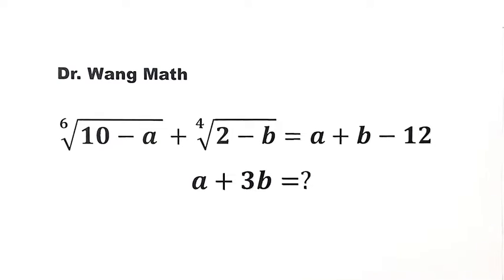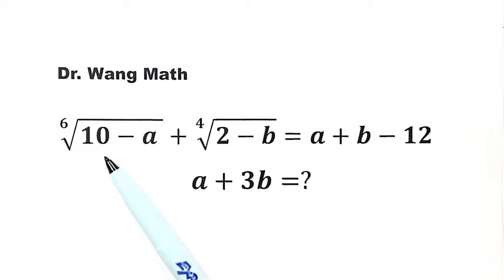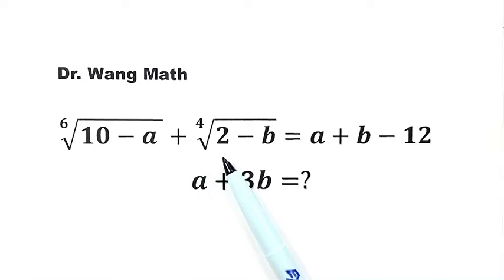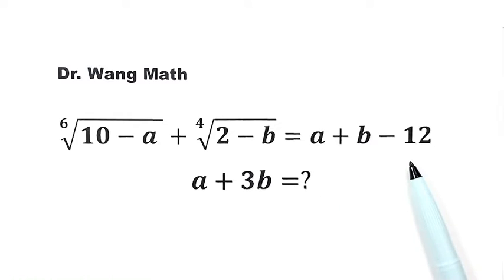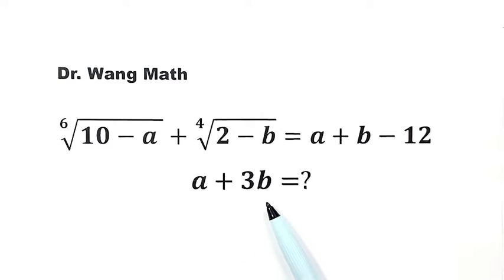In this video, we can solve this question. Given the equation: the 6th root of (10 minus a) plus the 4th root of (2 minus b) equals a plus b minus 12. Solve the equation for a plus 3b.